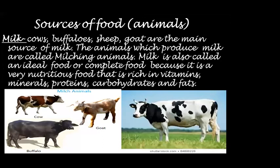The next very important and common nutrient-rich food that we obtain from animals is milk. Cows, buffaloes, sheep and goat are the main sources of milk. The animals which produce milk are called milching animals. Milk is also called an ideal food or a complete food because it is very nutritious, being rich in vitamins, minerals, proteins, carbohydrates and fats.